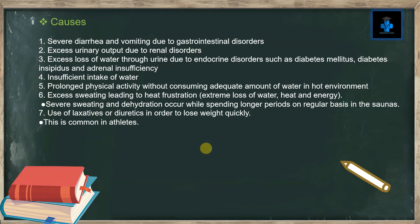Number six, excess sweating leading to heat exhaustion — that is extreme loss of water, heat, and energy. Severe sweating and dehydration occur while spending longer periods on a regular basis in saunas. Number seven, use of laxatives or diuretics in order to lose weight quickly, which is common in athletes.